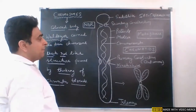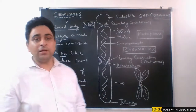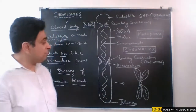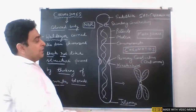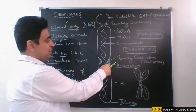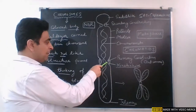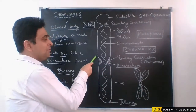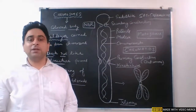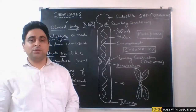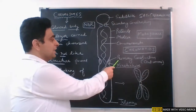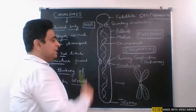Now we have to discuss the types of chromosomes. The classification of chromosomes is based on the location of the primary constriction. The position of the primary constriction, or centromere, can vary, and on that basis chromosomes can be classified into many types.